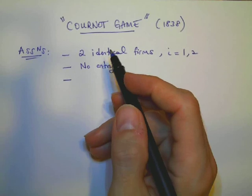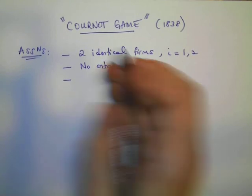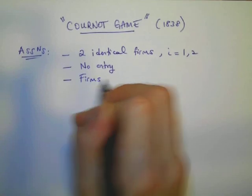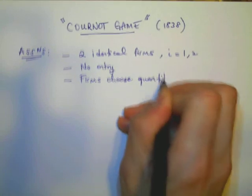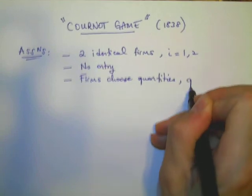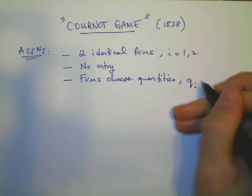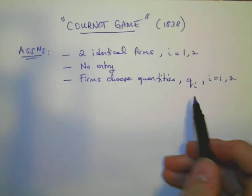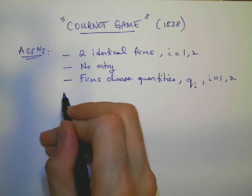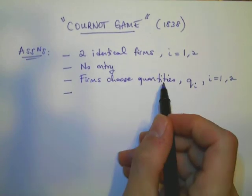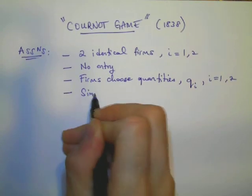Regarding the decision of the firms, the firms must choose quantities. So firms compete for quantities, choose quantities. And I will show quantities by Q naturally, and since we have two firms QI, where I is either 1 or 2. Firm 1 choose Q1, firm 2 choose Q2. Next, not only that they choose the quantities, but they make this choice simultaneously. So it's a simultaneous move game.